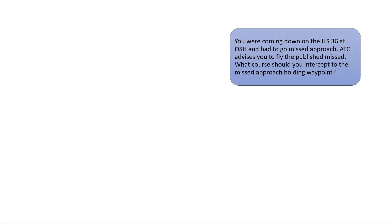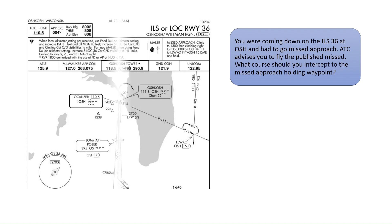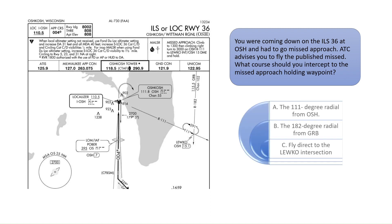Question 2 asks: you were coming down on the ILS 36 at Oshkosh/Whitman Regional and had to execute the missed approach. ATC advises you to fly the published missed. What course should you intercept to the missed approach holding waypoint? See the missed approach procedure in the top right of this ILS approach chart. The missed approach calls for a climb to 1,300 feet, then a climbing right turn to 3,000 on the 111-degree radial of the Oshkosh VOR as shown. The correct answer is A.